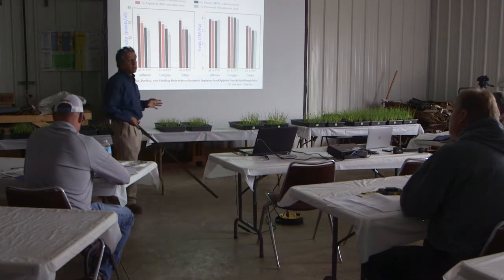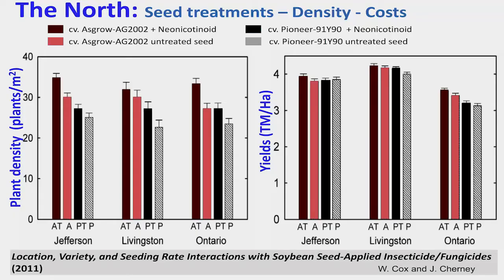In the north — a study from New York — you can see plant density and yields with neonicotinoid treatments using two seed types: Asgrow and Pioneer. Although plant density is slightly higher on neonicotinoids, there are no significant differences, and the same is true for yields. So we probably need to do more of these types of studies here in Kentucky to see the effect.